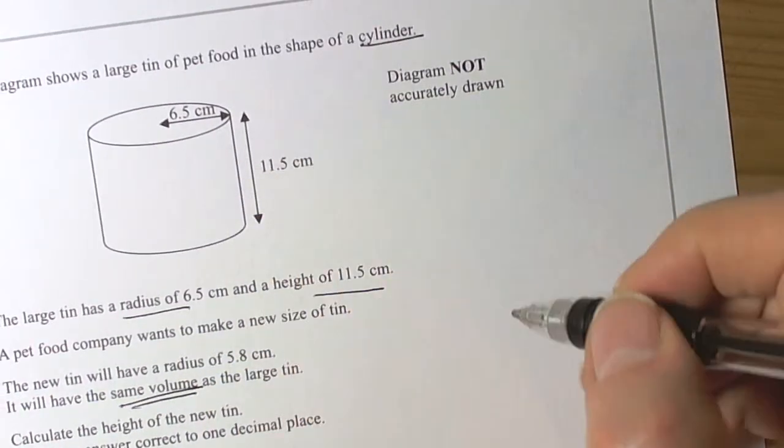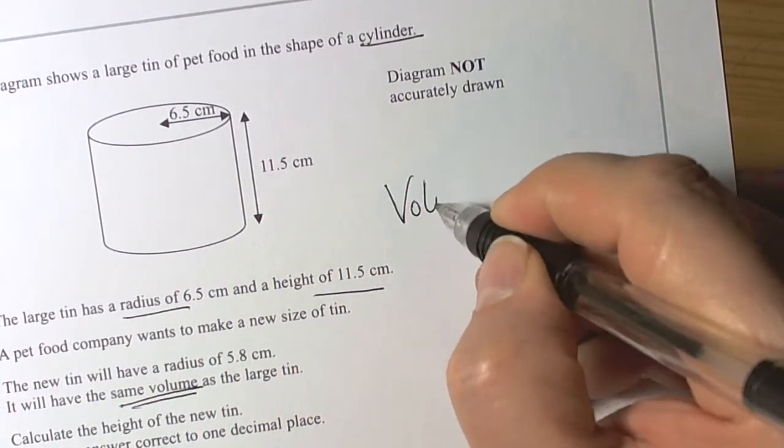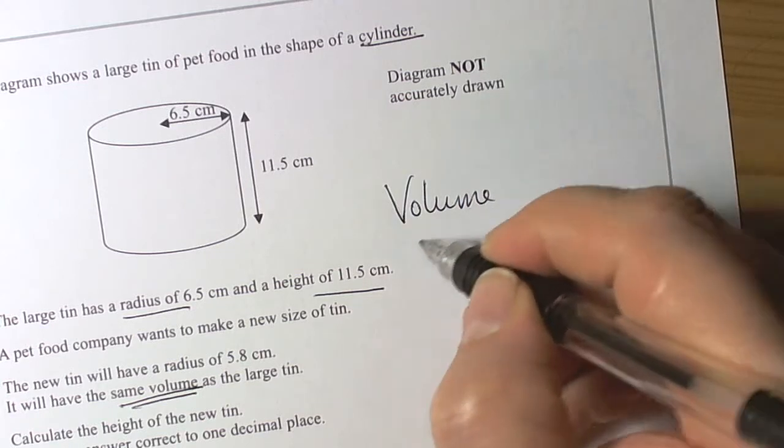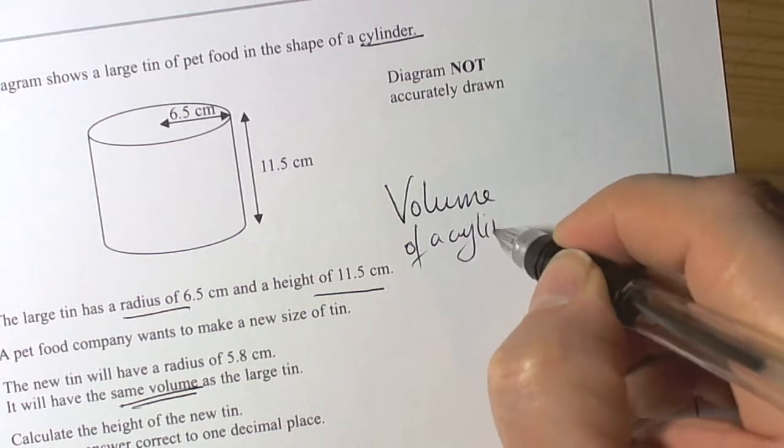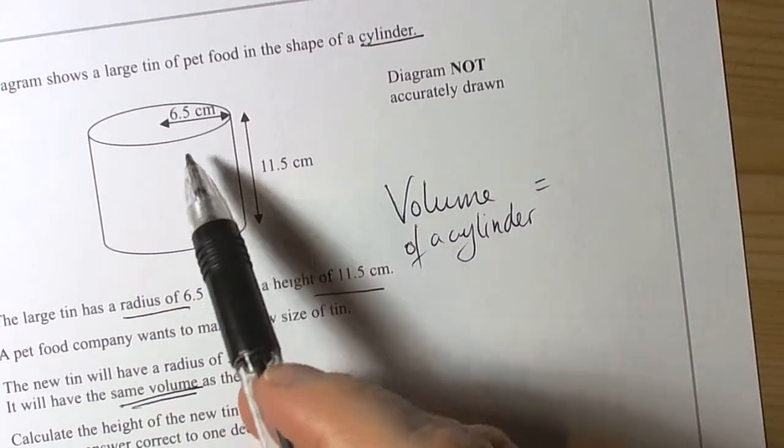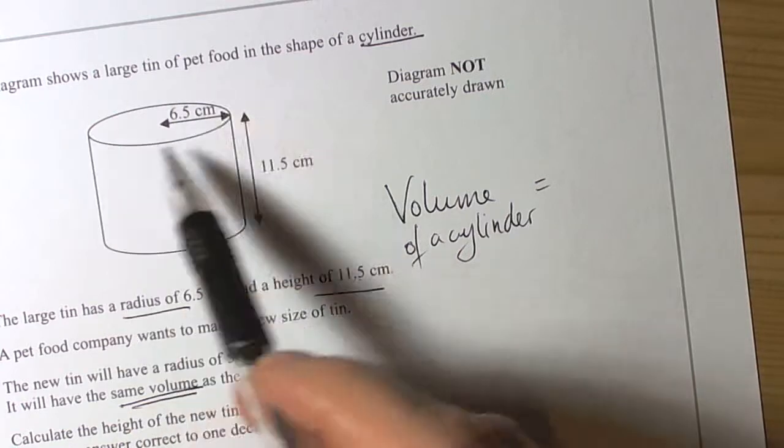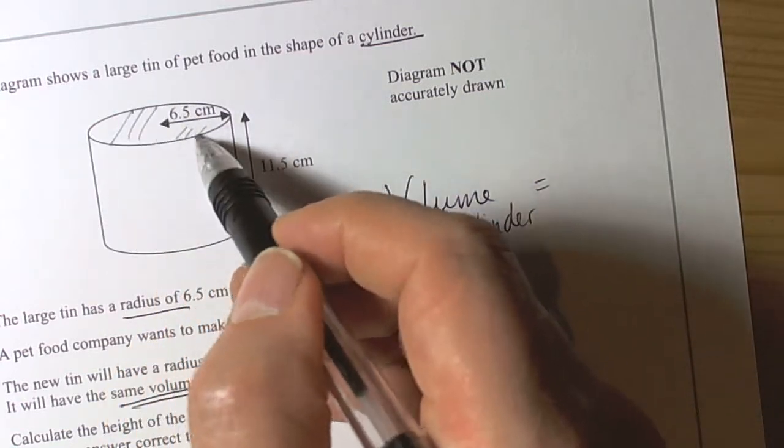It's talking about volume and a cylinder, so we should remember the formula for a cylinder. The volume of a cylinder - well, a cylinder is a special prism and the formula at the front of the exam paper tells us to take the area of cross section, which in this case is the circle.